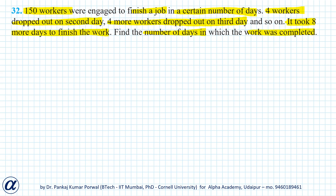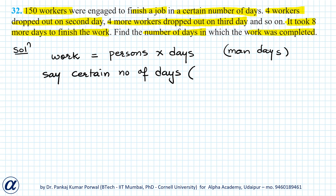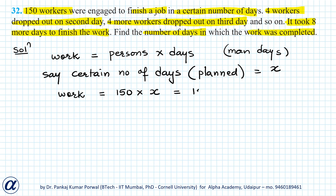To solve this question, we have to understand the concept of work. Work in this context is given by number of persons working multiplied by number of days, and this gives us the work in man-days. In this question, 150 workers were engaged to finish the job in a certain number of days. Let's say the planned number of days is x, so the work will be 150 multiplied by x, giving us 150x man-days.